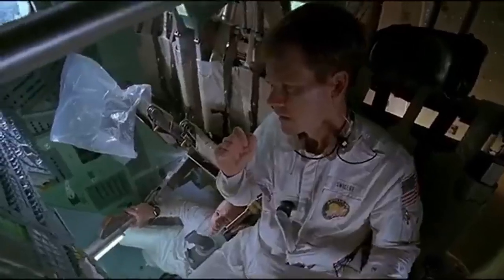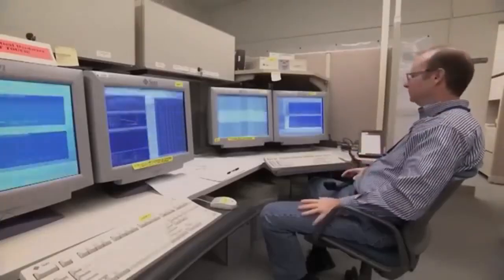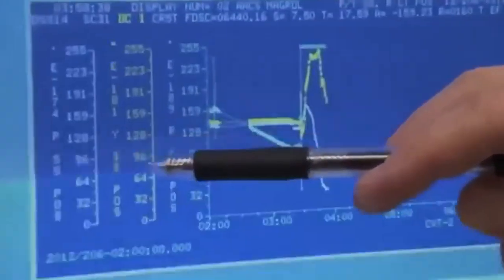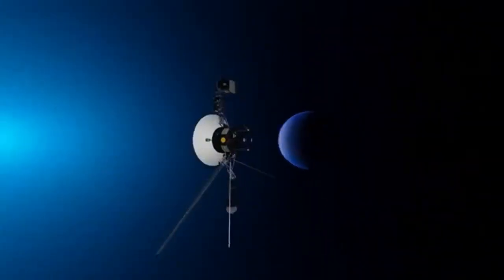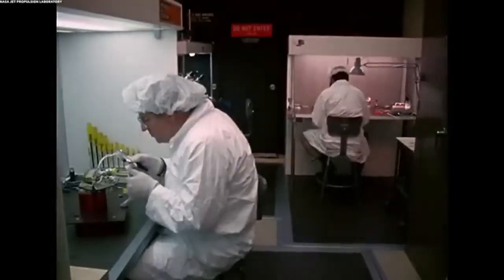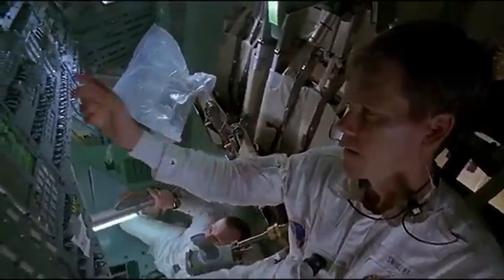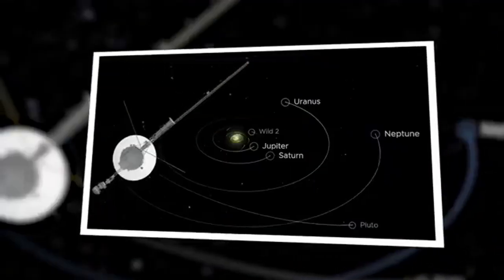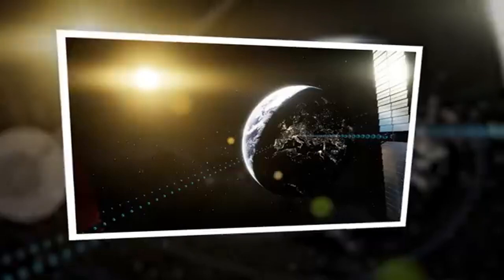Voyager 1's journey beyond the outer planets took it into the heliosheath, the outermost layer of the heliosphere, where the solar wind slows down and becomes turbulent. In 2012, it crossed the heliopause, entering interstellar space. This milestone marked the first time a human-made object had left the protective bubble of the heliosphere and ventured into the space between stars. The data Voyager 1 sends back from this region helps scientists understand the nature of the interstellar medium and the boundary conditions of our solar system.